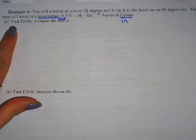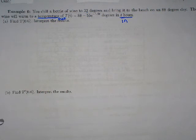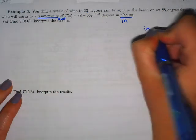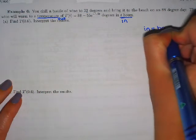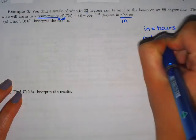The first part says find T(0.6) and interpret your results. So remember when we plug in, it's hours. What we get out, it's temp.